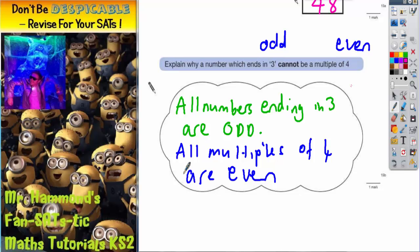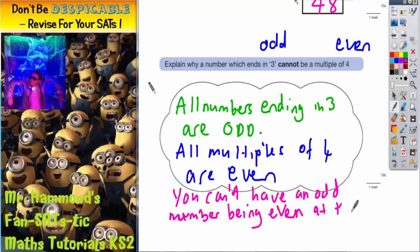So that would finish it off. You can't have an odd number being even at the same time. And there's your answer.